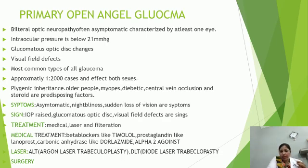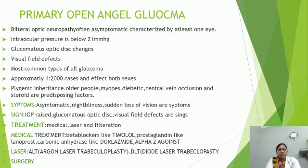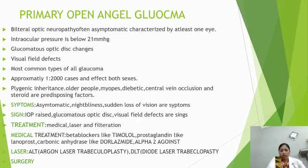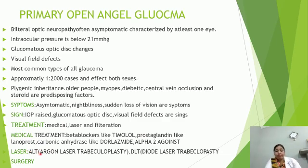Symptoms are typically asymptomatic initially, with night blindness and loss of vision. Signs include raised intraocular pressure. Treatment involves three types: medical, laser, and filtration surgery. In medical treatment, we use beta blockers like timolol, prostaglandins like latanoprost, carbonic anhydrase inhibitors like dorzolamide, and alpha-2 agonists. Two types of lasers are used: ALT and SLT. Surgery is also used.